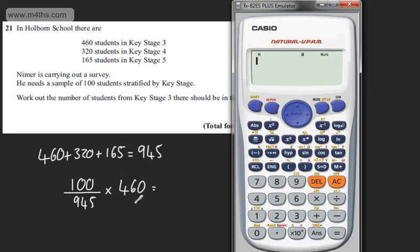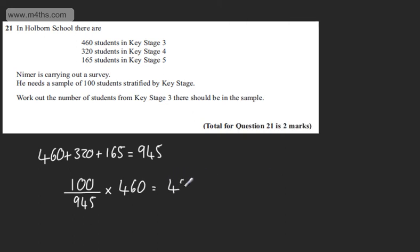So let's do this on the calculator. So we've got now 100 divided by 945 and we're going to multiply that by 460. That's going to give me now 48.677 dot dot dot.